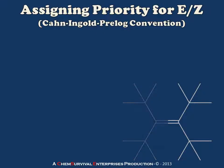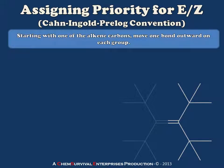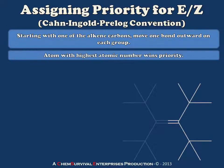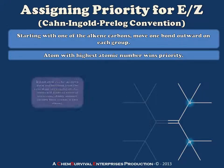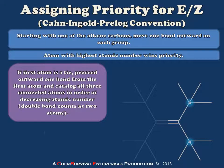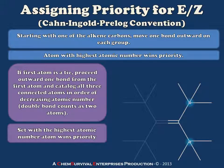I'm going to dim half of my molecule and concentrate on only one alkene carbon at a time. Starting with one alkene carbon, I move one bond outward and compare the atomic number of the atom I encounter. If I reach an atom with a higher atomic number than its competitor, we have a winner and the contest is over regardless of what else is attached. If there's a tie, we proceed one bond outward and find the set of bonded atoms with the highest atomic numbers — generating a list of three new atoms. Whichever list contains the highest atomic-numbered atom is our winner and therefore the higher priority substituent.